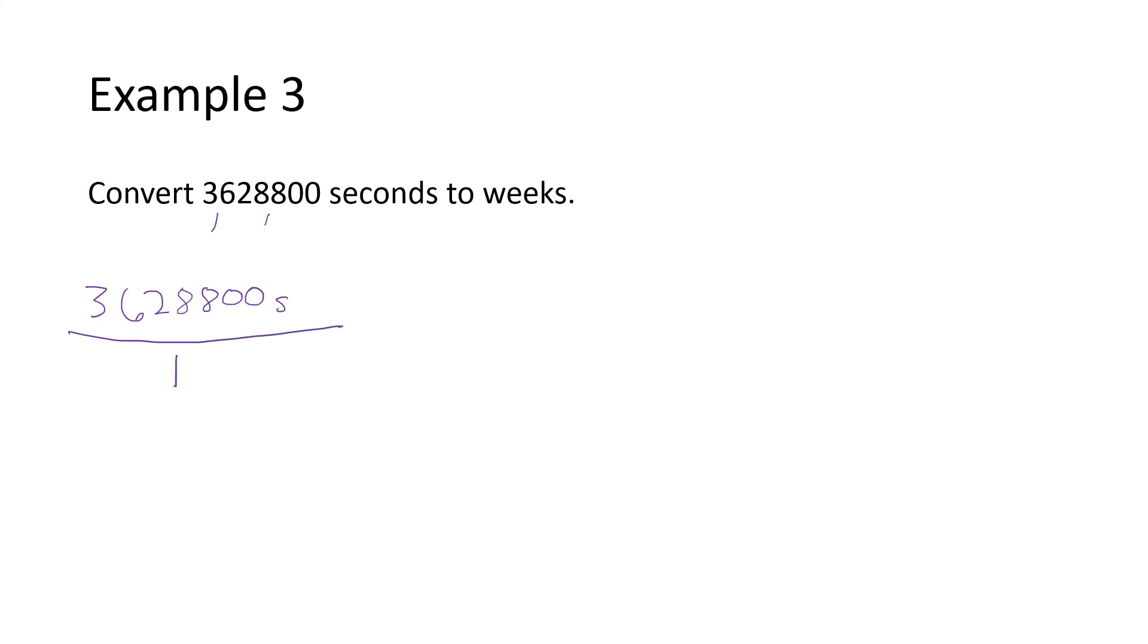I'll take the number we're given with its unit and place it over one. Now, I don't know about you, but off the top of my head, I have no idea how many seconds are in a week. But I do know that there are 60 seconds in one minute. So the first thing I'm going to do is convert from seconds to minutes. So for every 60 seconds, there's one minute. I'm getting closer to weeks, but I'm not there. So the bottom of the next step needs to have minutes. And I know that for every 60 minutes, there's one hour.